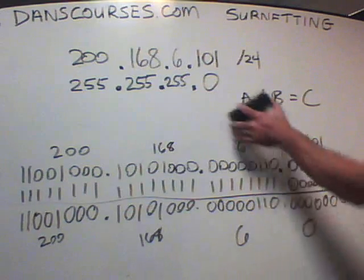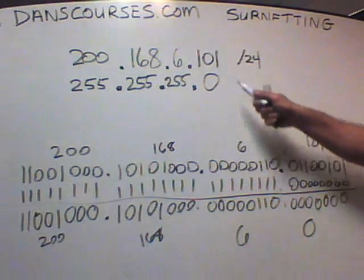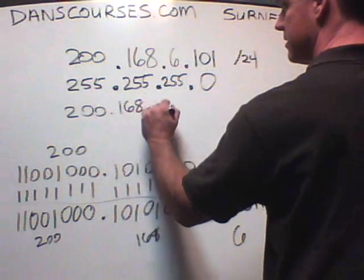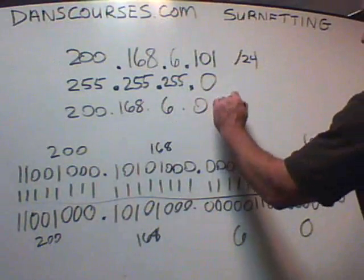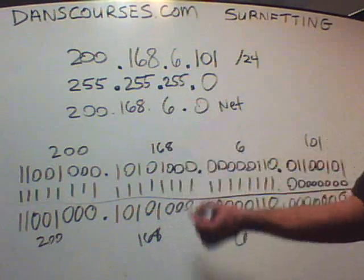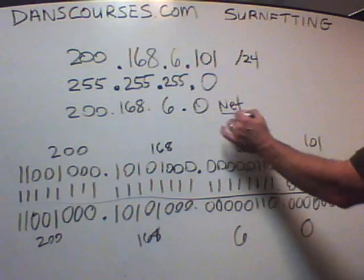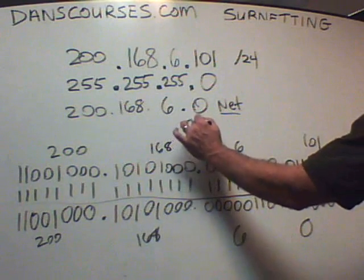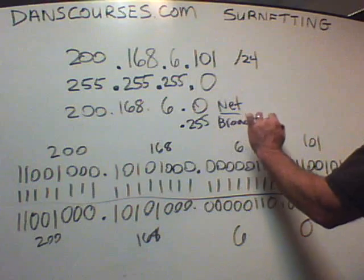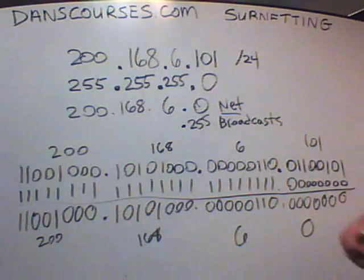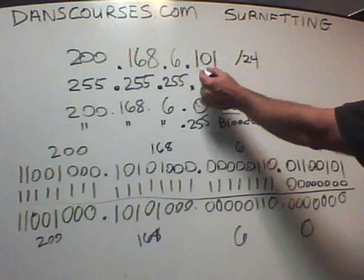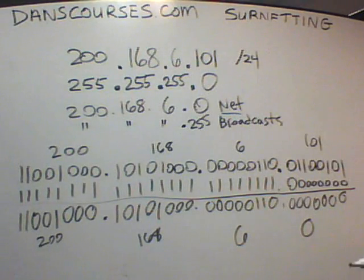In this case, the network address is 200.168.6.0. Nobody can be that address — it's the first address in the network. The .0 is the network address, and the last would be .255, which nobody can be because that's the broadcast address. The usable hosts in this network would be .1 to .254. Host .101 is a good host address in this situation.